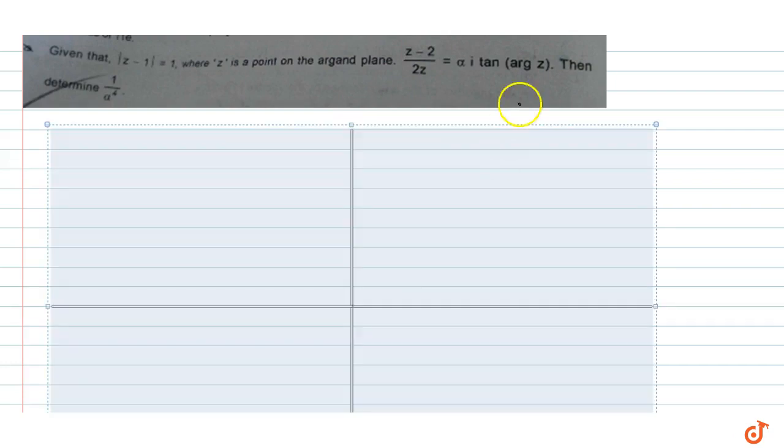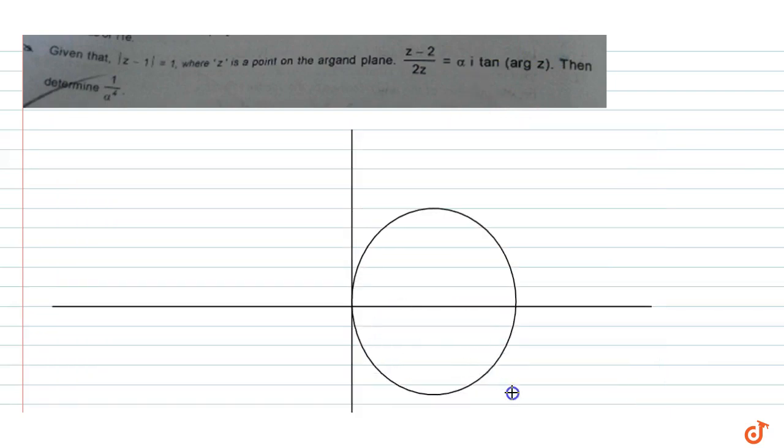Sorry, circle is not a straight line, so we will draw a circle here. Modulus of z is equal to 1, its center is (1,0), okay.